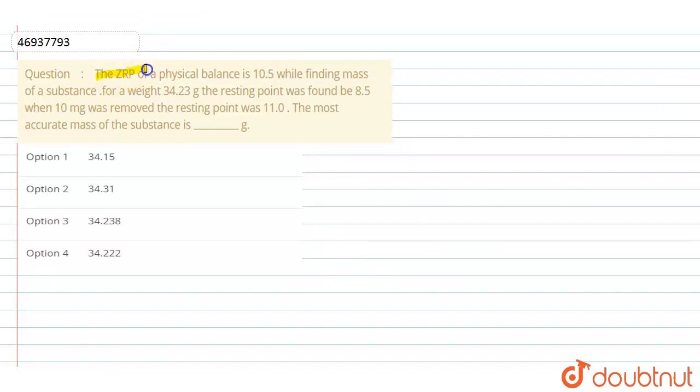The ZRP of a physical balance is 10.5. ZRP means zero resting point. While finding mass of a substance for a weight of 34.23 grams.